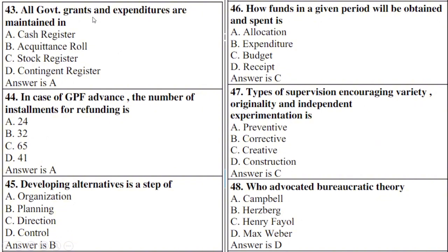All government grants and expenditures are maintained in — right option is A: cash register. Question 44: In case of GBF advance, the number of installments for refunding is — right option is A: 24.